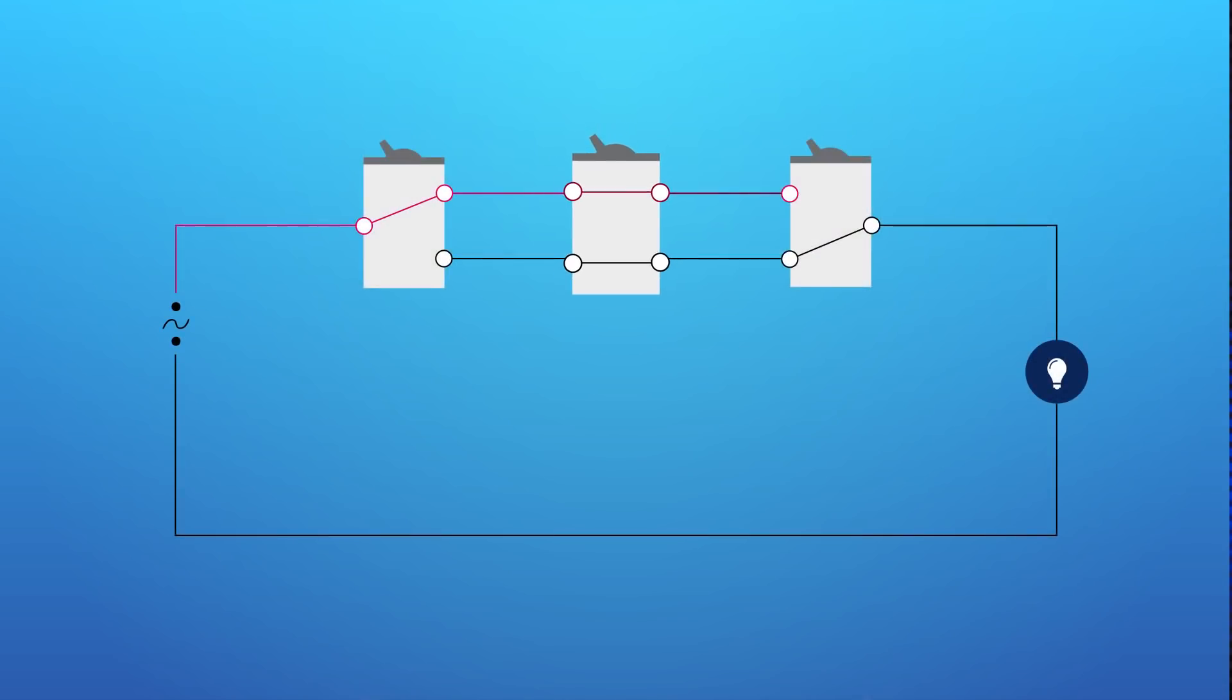This switch is installed between the other two and toggles the active traveller. This means that any switch can turn the light on or off. With this concept you can add an endless amount of four-way switches into the circuit as long as you have three-way switches at each end.